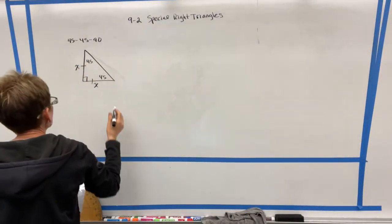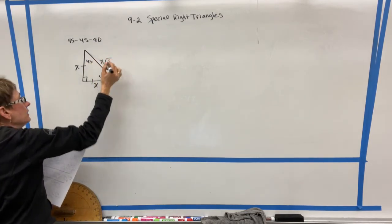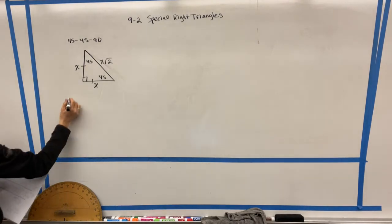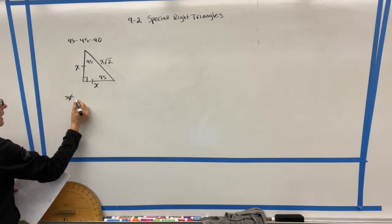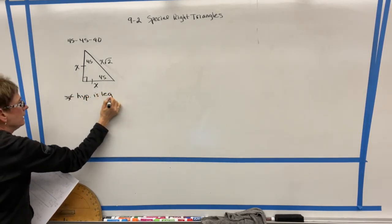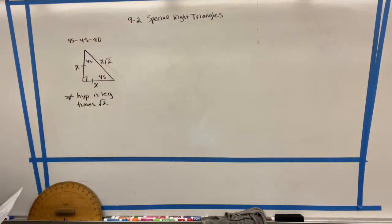We also know because this is a special 45-45-90 triangle that the hypotenuse is always going to be whatever the leg is times radical two. So I would make a little note of that on your notes. I would say the hypotenuse is the leg times radical two. That is super important to know.